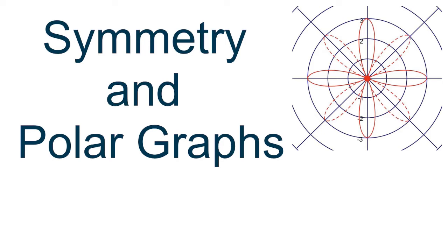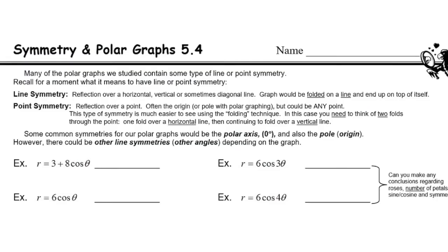Another topic that we study in our polar chapter is symmetry, and you're going to find out that primarily this is a visual lesson where we're just going to see some symmetry and then learn how to state it correctly. Just like in a geometry class, when we talk about symmetry, we can have line symmetry, which would be like a reflection over a horizontal, vertical, or diagonal line. I like to think of it as folding over a line, same idea as a reflection, or we can have point symmetry.